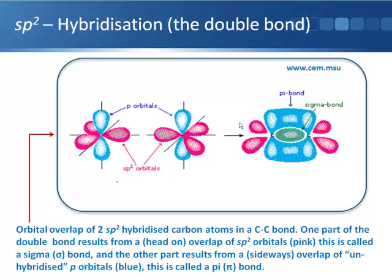And we can then go on to see how these are involved in bonding. The hybrid orbitals, shown in pink here, these two lobes will overlap to give a central sigma bond. And when this happens it brings the two P orbitals close enough together that you get a sideways overlap of these orbitals. And this is what the second bond in a double bond is.